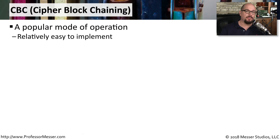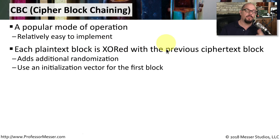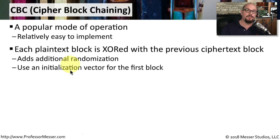A popular mode of operation that's relatively easy to implement is CBC, or Cipher Block Chaining. With Cipher Block Chaining, we add some randomization into the block cipher process. We take each plain text block and XOR it with the previous cipher text block that we created, adding the randomization that we didn't have with Electronic Codebook. We don't have cipher text for the first block, so we use an IV, or initialization vector, to add randomization for that very first block we encrypt.